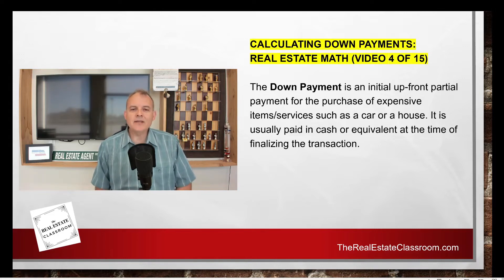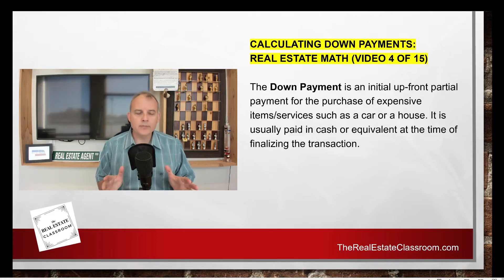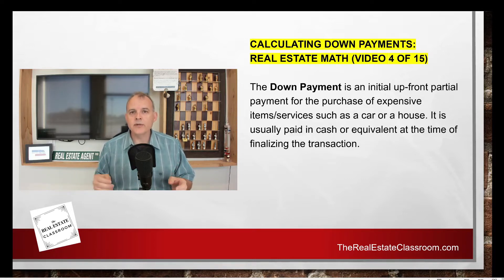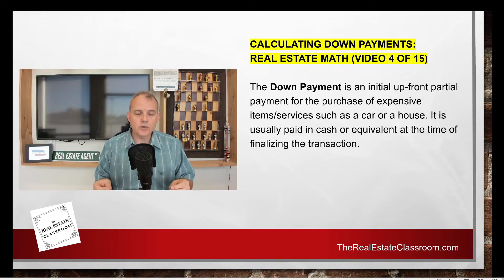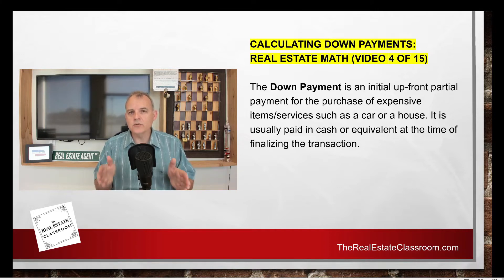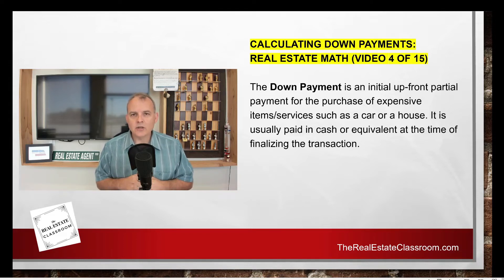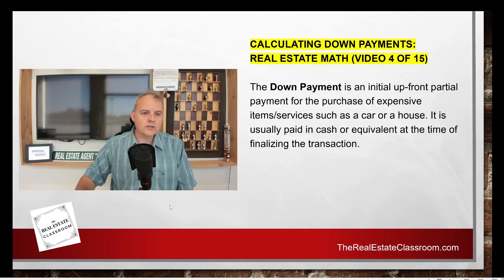So let's get to calculating down payments. First of all, starting with the basics — what is a down payment? A down payment is that initial upfront payment that a purchaser gives, typically on expensive items, and then they finance the rest with the lender. A home buyer is going to purchase a home and put a certain percentage of that money down, depending on the requirement of the individual loan they're getting. Different types of loans require different percentages of down payments — for example, conventional loans may require 5, 10, or 20% down. It's just that initial upfront cash payment paid at closing.